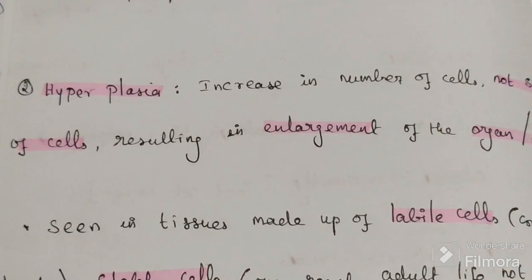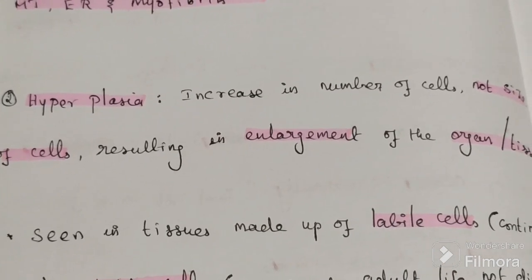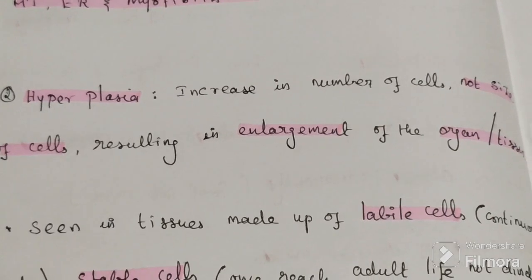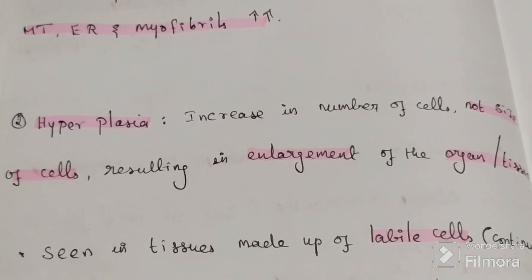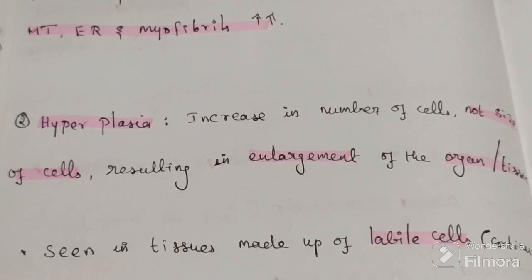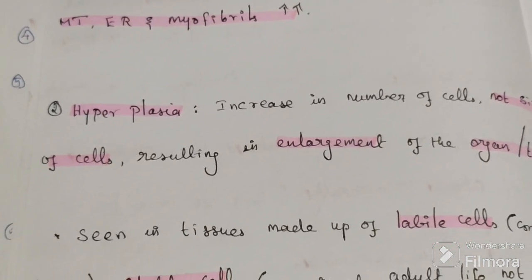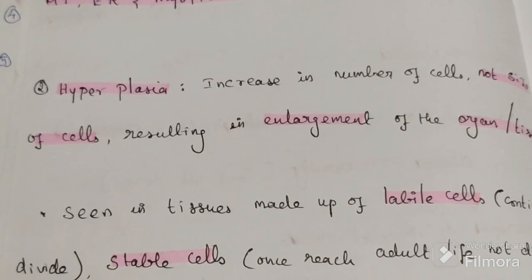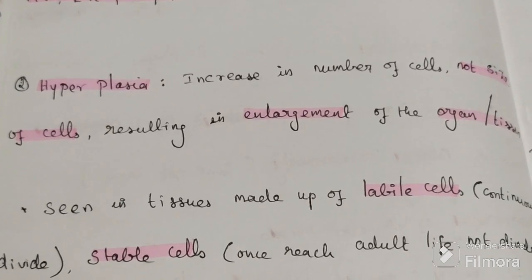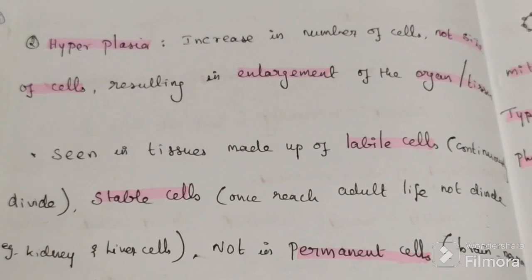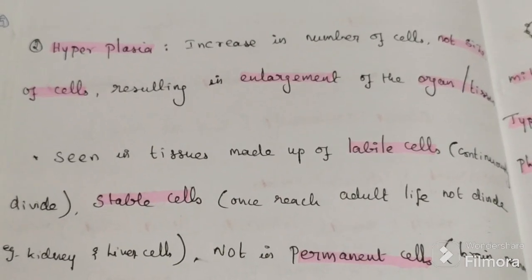The second cellular adaptation is hyperplasia — an increase in the number of cells, not in size, resulting in enlargement of an organ or tissue. Hyperplasia is seen in tissues made up of labile cells and stable cells, not in permanent cells, because labile and stable cells can divide.